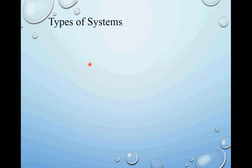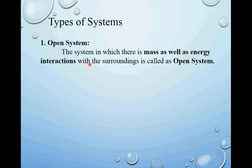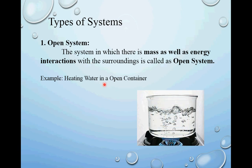Now, types of systems. We have three types. The first is the open system. As per definition, the system in which there is mass as well as energy interaction with the surroundings is called an open system. Example: heating water in an open container. Suppose you have an open container with water in it and you are heating it. The burner is in the surroundings, the walls of the container are the boundary, and the water is your working substance. Heat is transferred from surroundings to the system — so there is energy interaction.